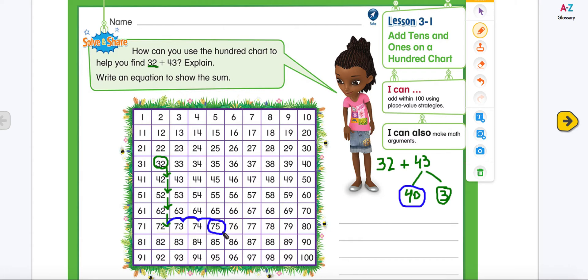And boys and girls, we always recheck our work using a different strategy. So what I'm going to use here, I'm going to use my standard algorithm method to check if I get the right answer. So I'm going to put my numbers, 32 and 43. I'm going to line them up, making sure that my ones goes under the ones. So this is my ones, and this is my tens. So first, I'm going to start by adding my ones. 2 plus 3 equals 5. Now, I'm going to add my tens. 3 plus 4 equals 7. And you can see that my answer matches with this.